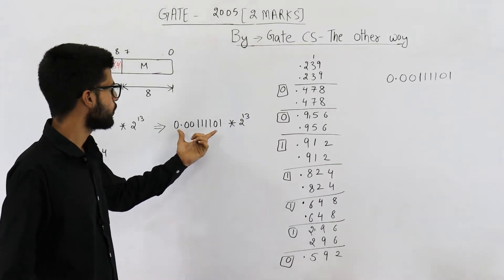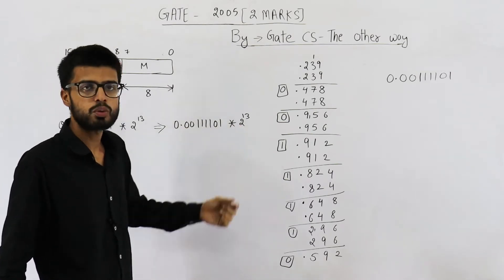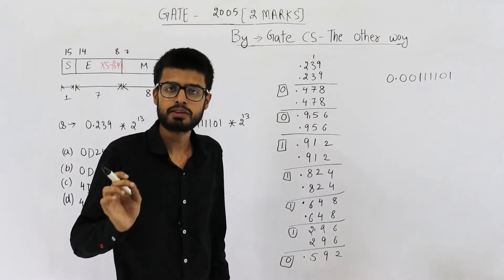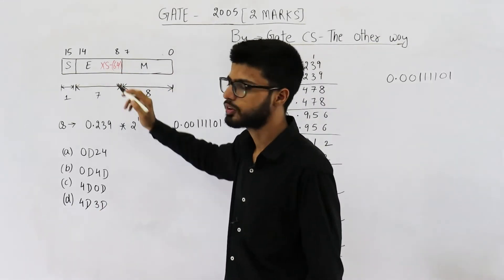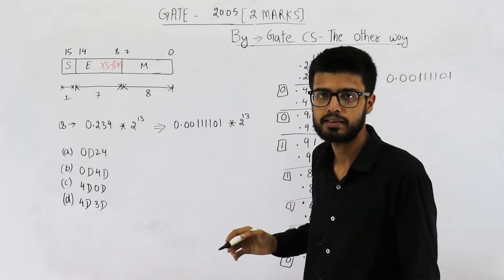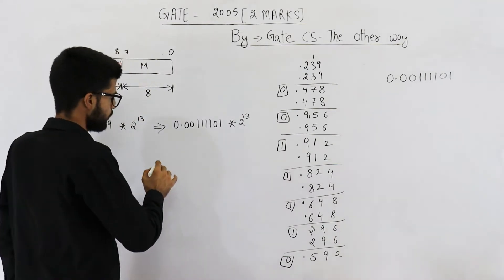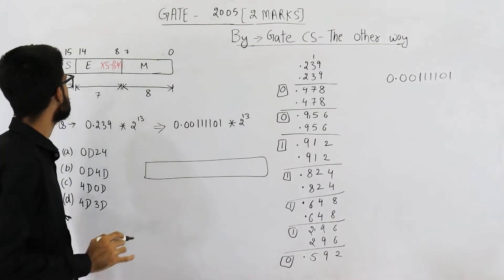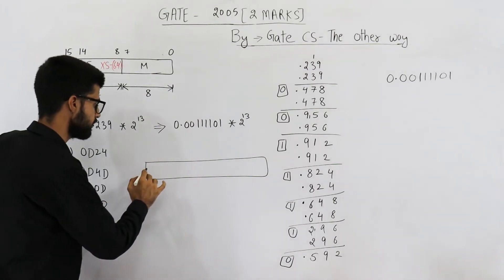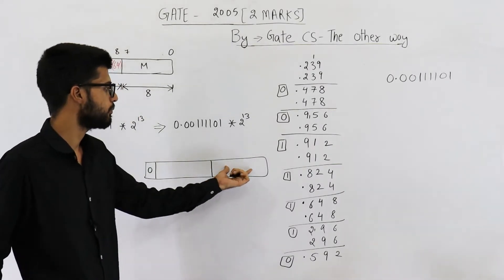Now this number, the given number is 0.00 then 4 times 1, 0, 1 × 2^13. We need to represent this in mantissa bits. And 2^13, the exponent is 13 which is the actual exponent needs to be biased. They are saying exponent is saved as XS64. That means bias value is 64.